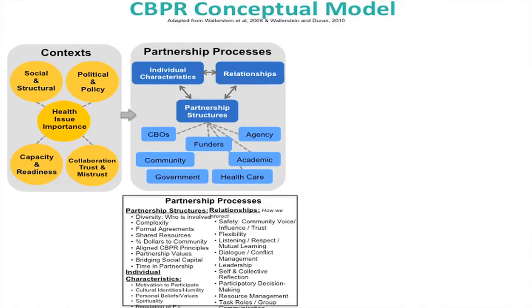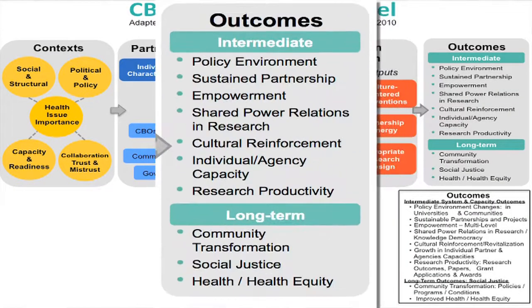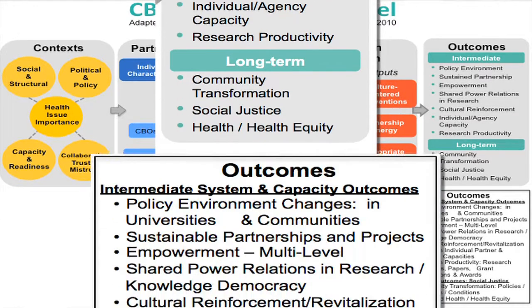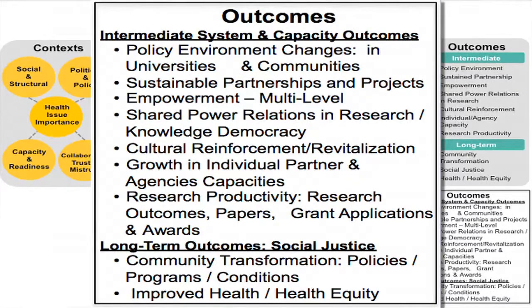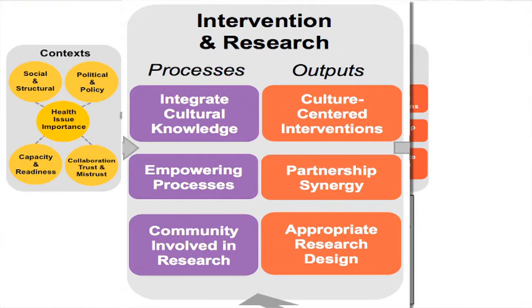We go from context to partnership to intervention, and then to outcomes. Of course, we're looking at health equity — that is the fundamental big outcome, manifested in many ways: better access to health and medical care, training more people from disadvantaged communities in mainstream sciences, or greater utilization and funding for traditional approaches to public health and medicine. Some of those intervention and research processes are really outputs — short-term outputs related to increased partnership synergy, or interventions that are actually centered within the culture and community.